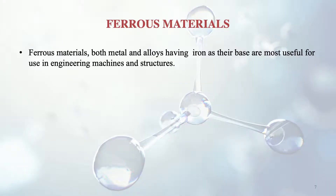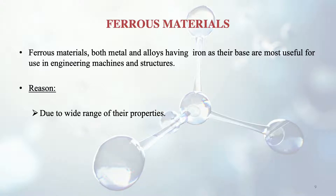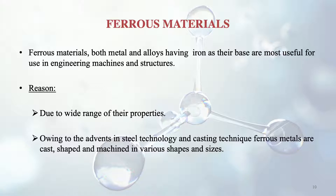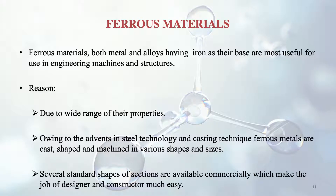Ferrous materials — both metals and alloys having iron as their base — are most useful for engineering machines and structures because of the wide range of properties they possess. With advances in steel technology and casting techniques, ferrous metals can be cast, shaped and machined in various shapes and sizes. Several standard shapes and sections are commercially available, which makes the job of the designer and constructor much easier.